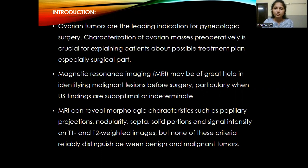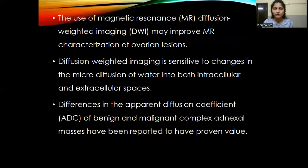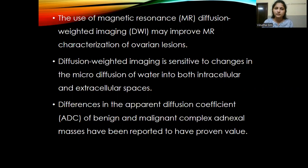MRI can help reveal morphological characteristics, including papillary projections, nodular and solid portions, and signal intensity on T1 and T2-weighted images. However, based on these basic sequences alone, we will not be able to distinguish between benign and malignant tumors. That is where diffusion-weighted imaging comes in, as it can help characterize the lesion as benign or malignant in nature.